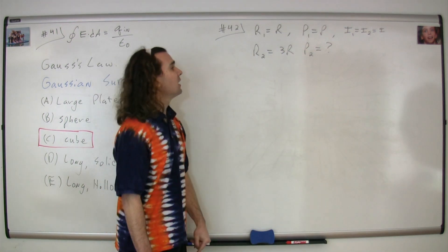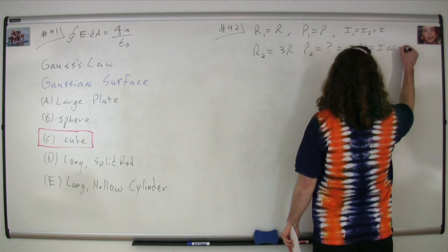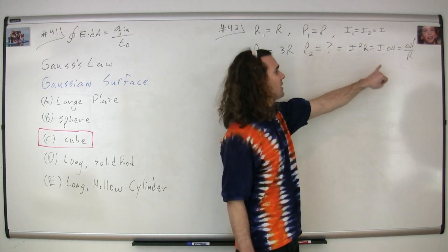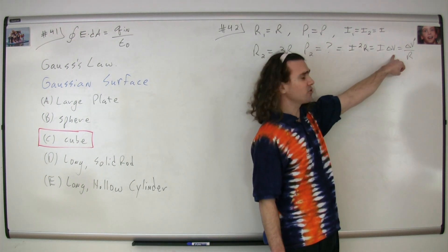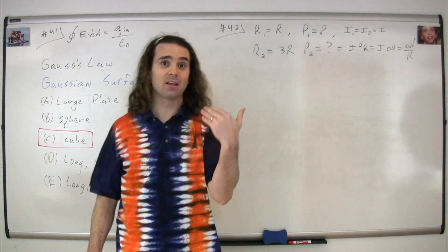We need to start by remembering again our three equations for electric power. Electric power is equal to the current squared times the resistance. It's also equal to the current times the electric potential difference, and it's equal to the electric potential difference squared divided by the resistance.